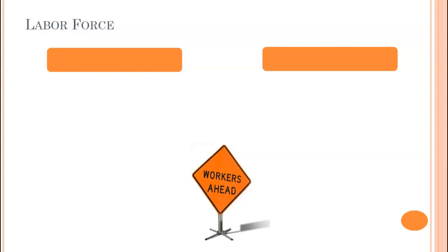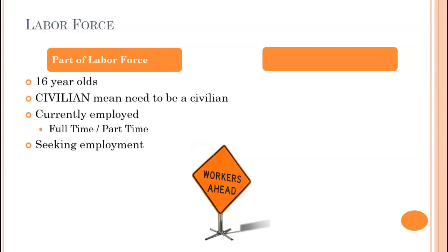Who's in the labor force? The labor force consists of people in the United States who are 16 years or older, must be a civilian — it is the civilian labor force — and must be currently employed full-time or part-time (there is a minimum threshold of roughly one hour per week), or not working but actively applying and seeking employment.